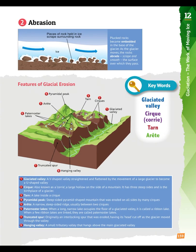You need to be able to recognise all eight features on a diagram. You don't need to be able to draw and explain how they're all formed — just one, and that is the glaciated valley. But you do need to be able to recognise all eight items on a diagram.